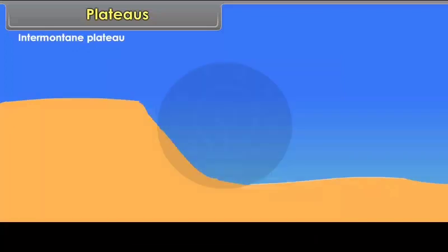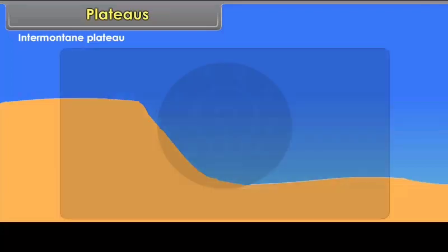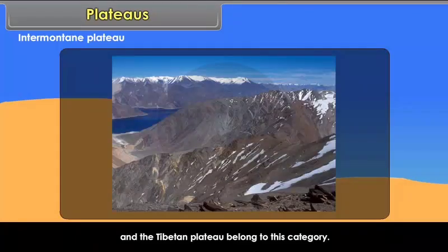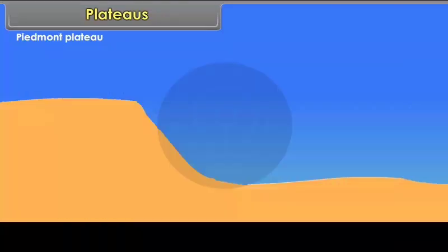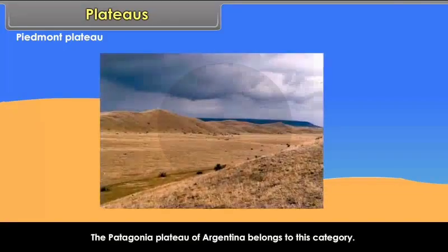Intermontane Plateaus are plateaus which are formed in between mountain ranges. The Bolivian Plateau and the Tibetan Plateau belong to this category. Piedmont Plateaus develop at the foot of mountains; they have mountain ranges on one side while there is a sea or plain on the other side. The Patagonia Plateau of Argentina belongs to this category.